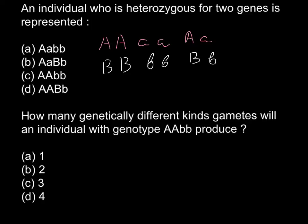Let's start from answer D — we have here homozygous dominant for A and heterozygous for gene B. So this is an incorrect answer for two heterozygous genes. Answer C: we see homozygous dominant for A and homozygous recessive for B — also incorrect. Answer A: heterozygous for gene A and homozygous for gene B — also not correct. So the correct answer is B: we see heterozygous form for gene A and heterozygous form for gene B. This is the correct answer.